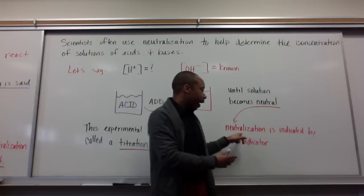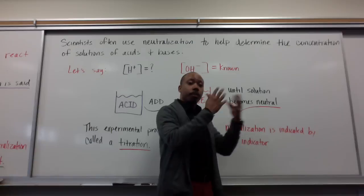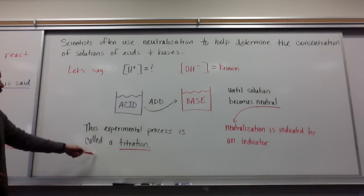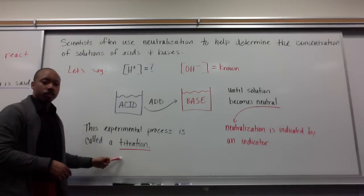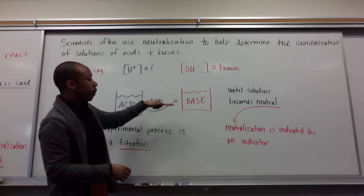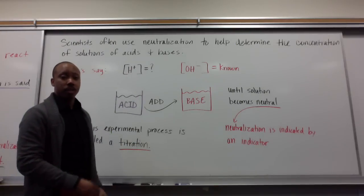The endpoint is going to be indicated by an indicator. The solution will turn pink, usually, if phenolphthalein is involved. This experiment is called titration. This process is called a titration, adding an acid to a base or a base to an acid to figure out the unknown concentration of either or.